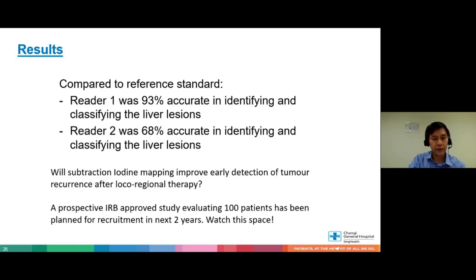What we have already planned — and already have IRB approval for — is to evaluate 100 patients over the next two years. We're going to recruit them, so please do watch this space as we get them recruited and analyze whether iodine mapping has really helped us detect earlier tumours.